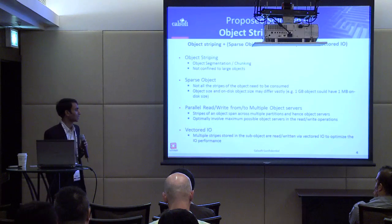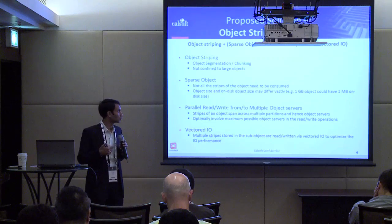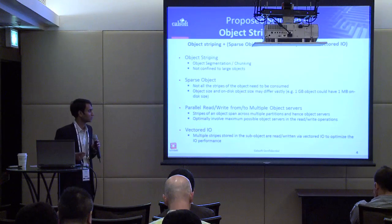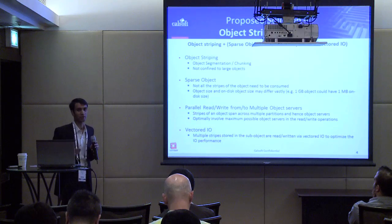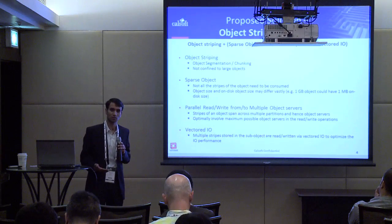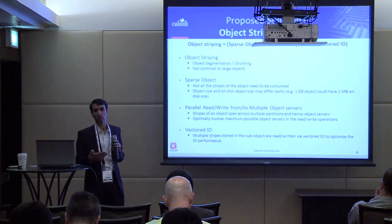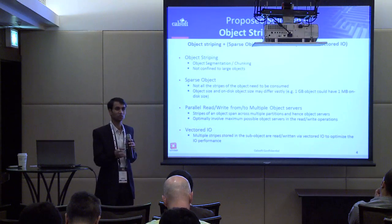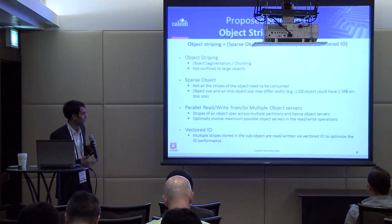With parallel reads and writes, since stripes are pushed into multiple partitions and hence multiple object servers, read and write operations will involve multiple object servers. In a literal sense, we get parallelism because object servers are completely different entities. We read all stripes in parallel from all involved object servers, but we must be optimal — not using the maximum possible number, but an optimal maximum number.